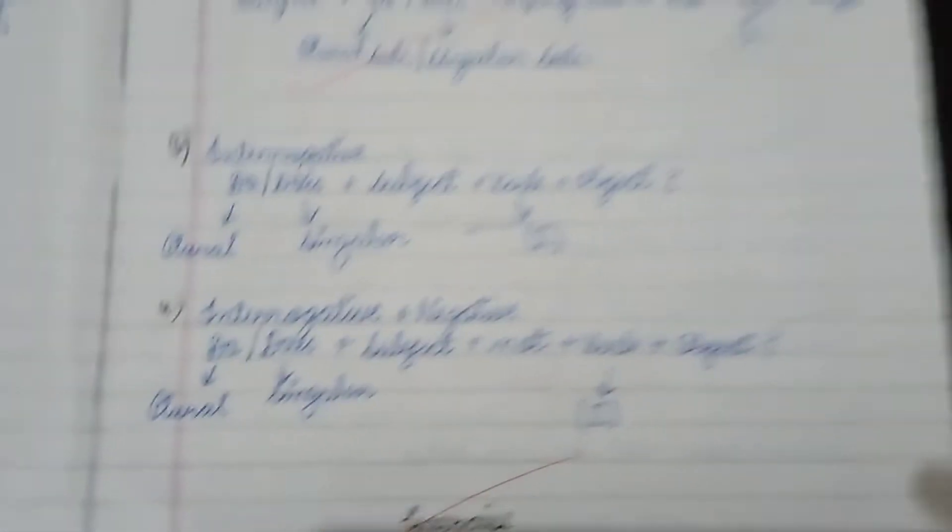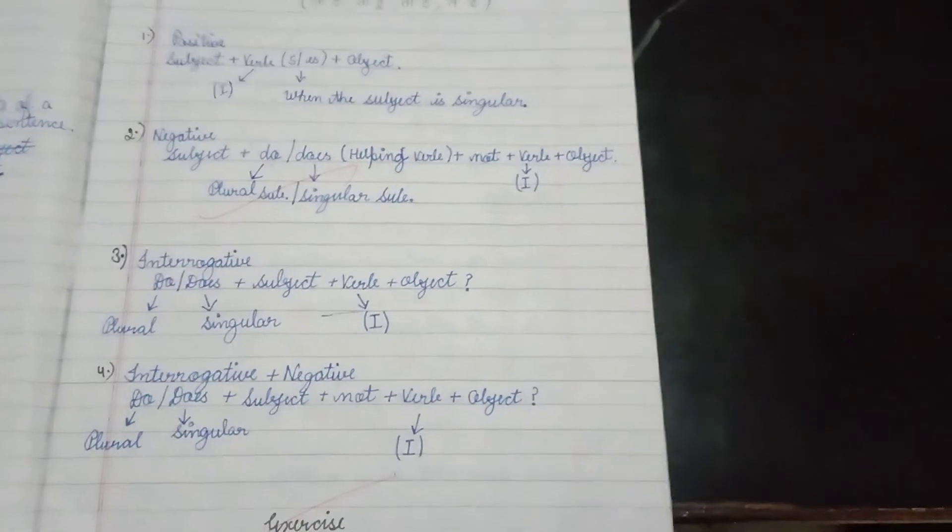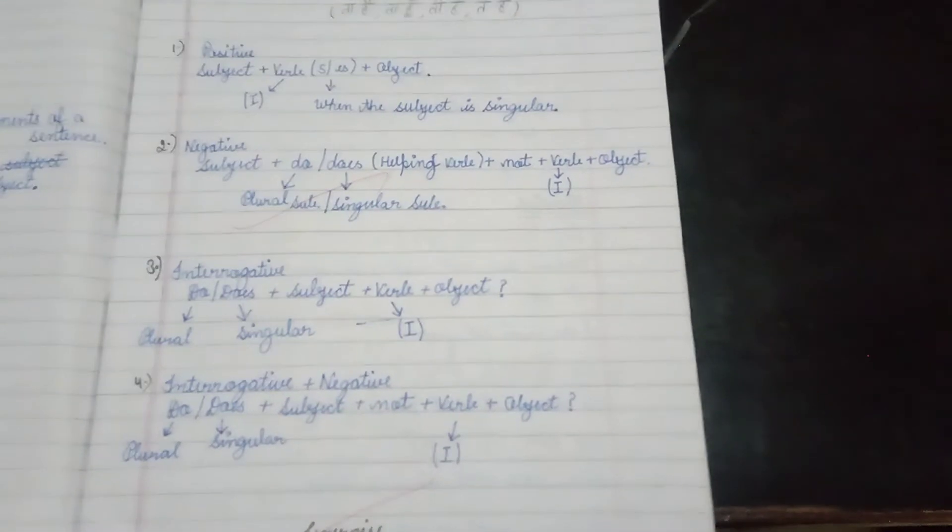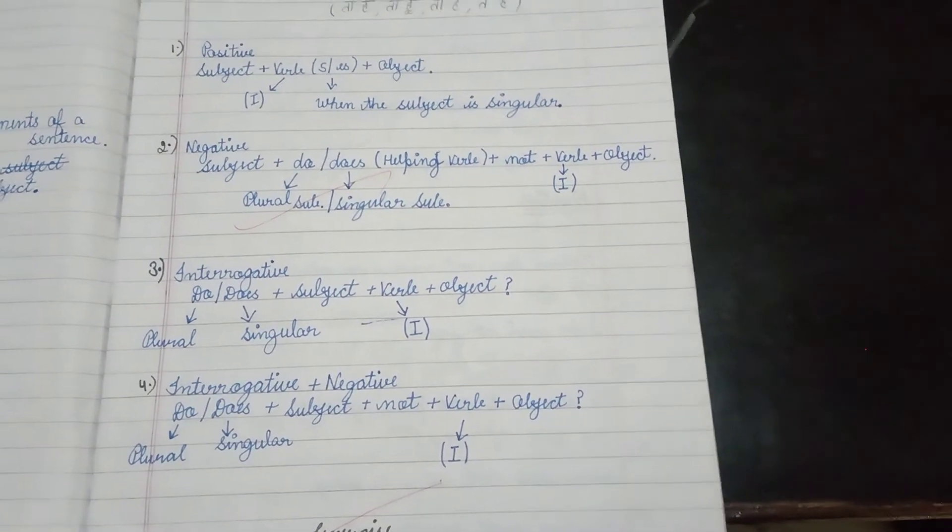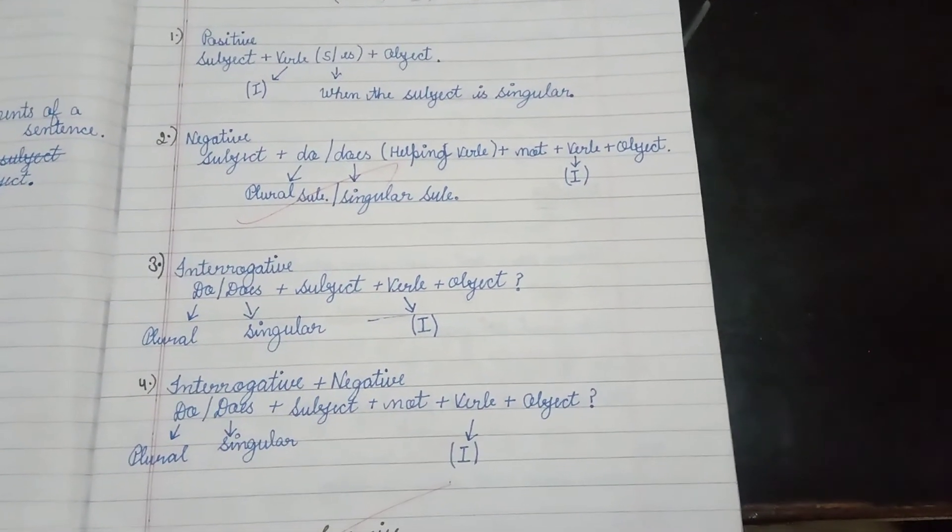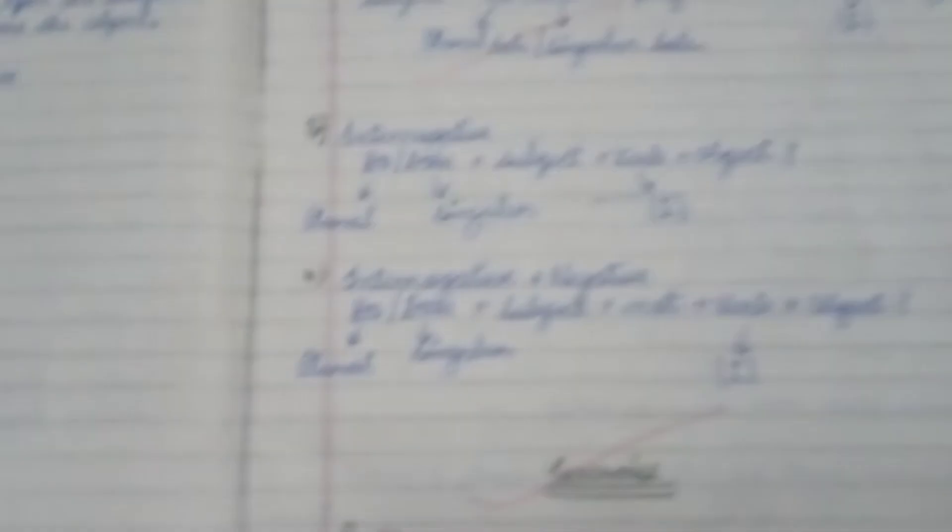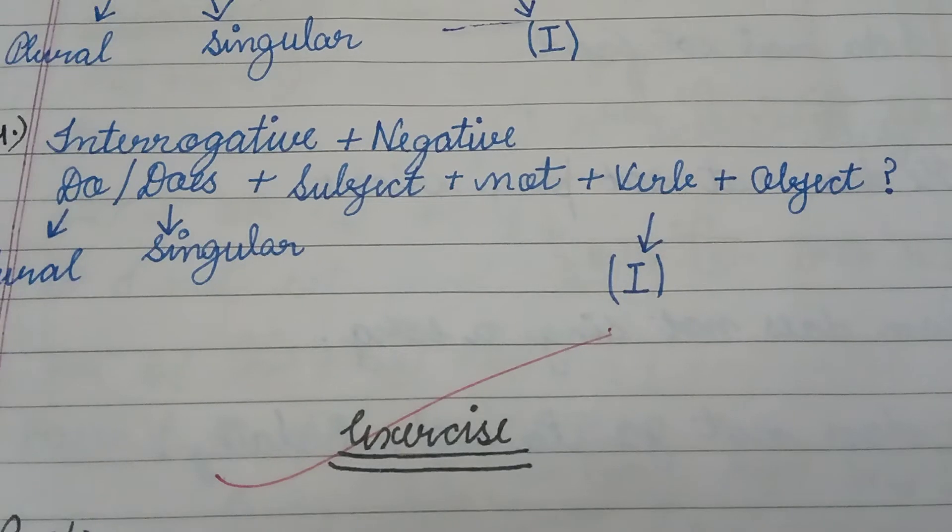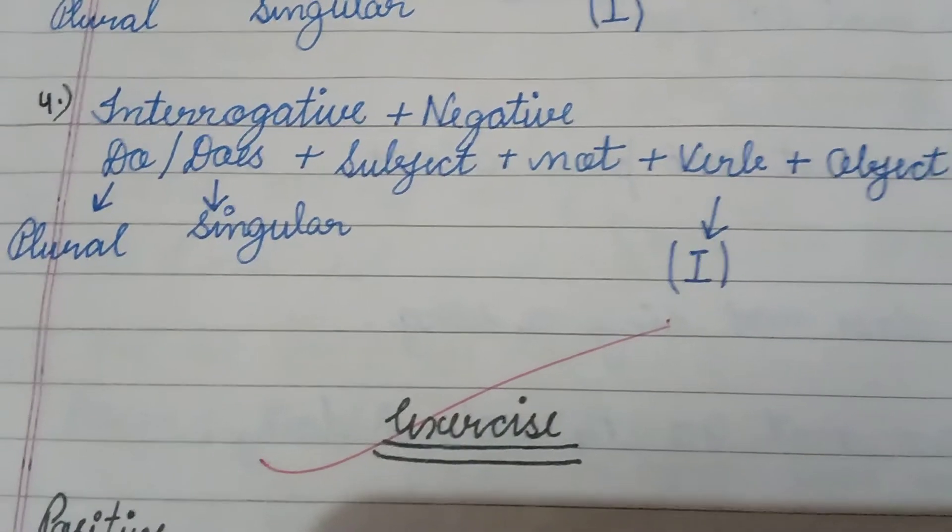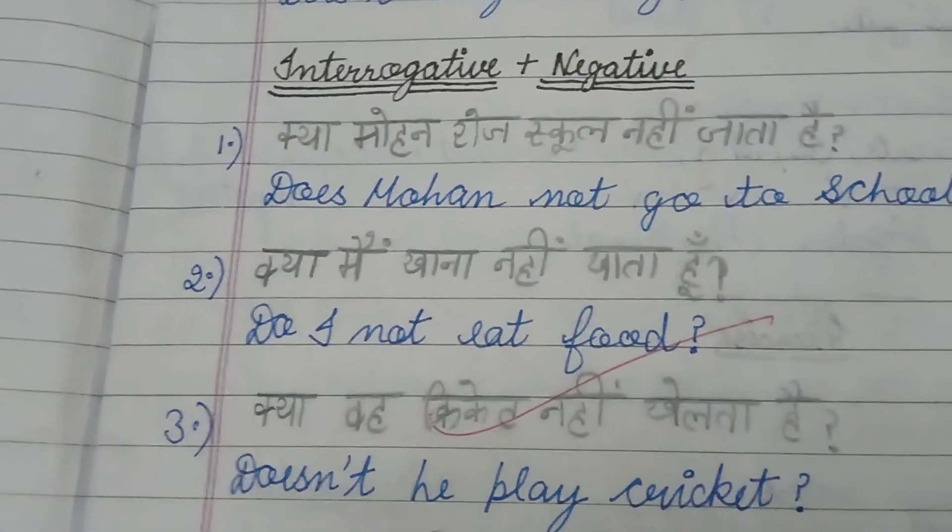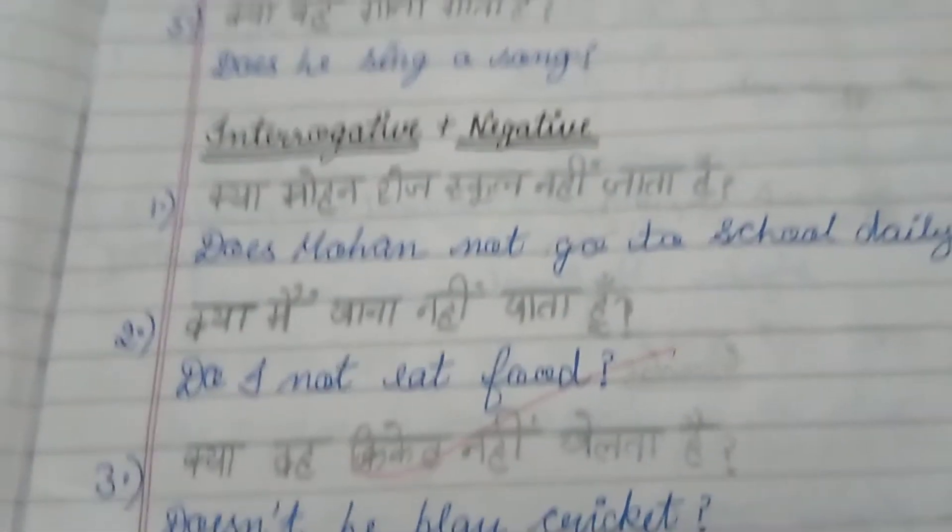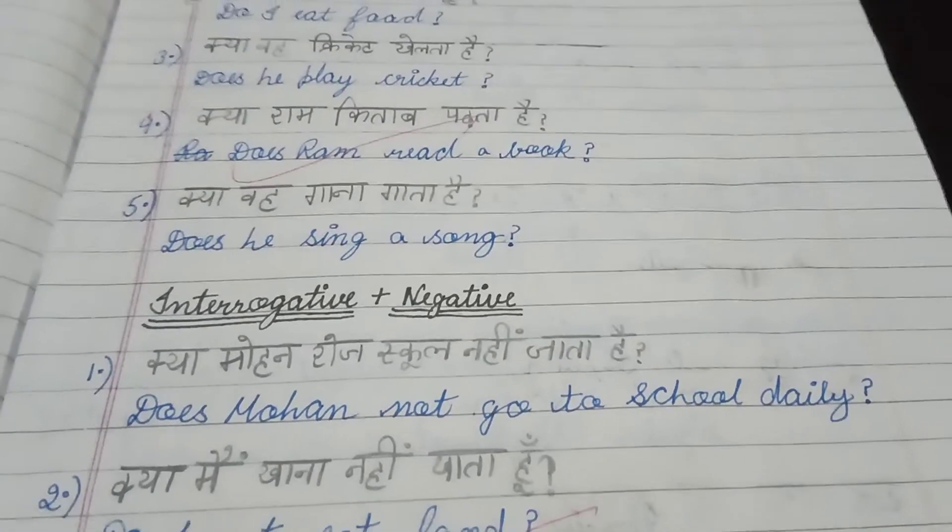So, this is the first tense. I will be sending you these notes and you are required to maintain it on the third page of your English grammar notebook. Now, along with this tense, I will be giving you exercise. For the exercise, I will give you a few statements on your WhatsApp group which I would like you to change to negative, interrogative, and interrogative plus negative.